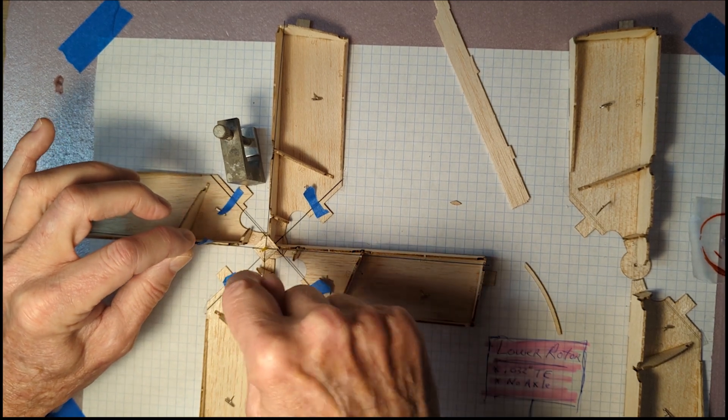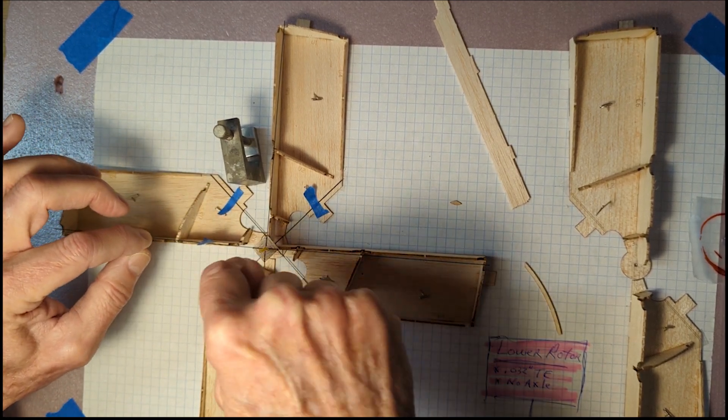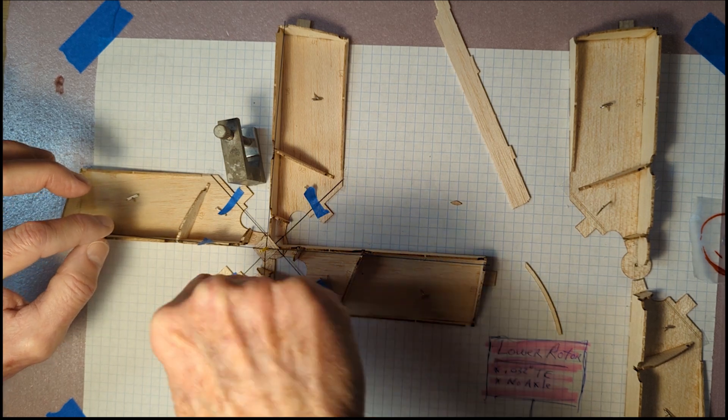So if I push the rod this way, the tube will lean this way. If I pull the rod this way, the tube will lean that way.